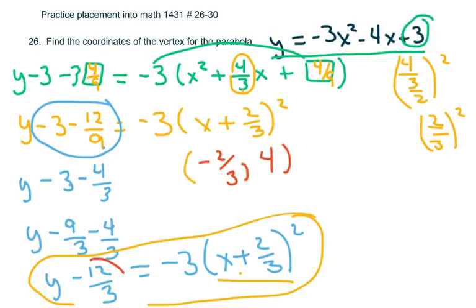Or you could have just taken this and added 4 to this side. Alright? And then that would have been, if you're used to seeing it that way, in vertex form. Okay.